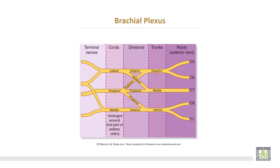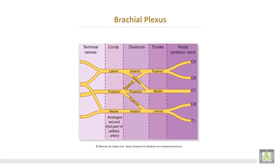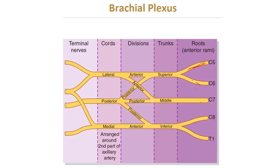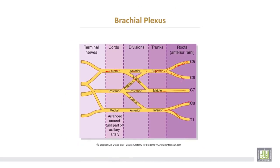The stages of root formation: C5 and C6 unite to form the upper trunk, while C7 alone forms the middle trunk, and C8 with T1 forms the lower trunk of the brachial plexus. Each trunk then divides into anterior and posterior divisions. The three posterior divisions form the posterior cord, the anterior divisions of the upper and middle trunks form the lateral cord, and the anterior division of the lower trunk forms the medial cord.